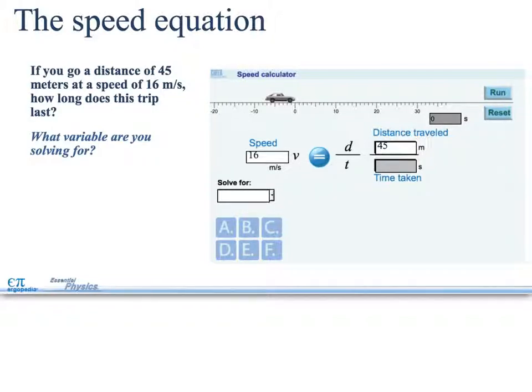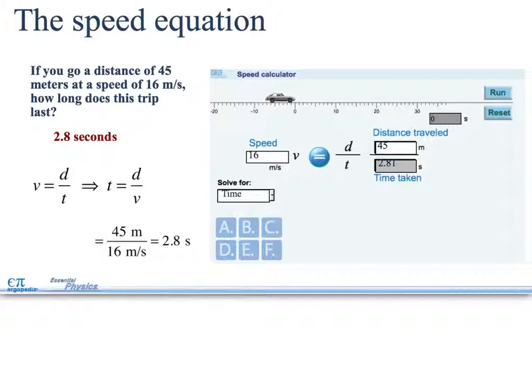If you go a distance of 45 meters at a speed of 16 meters per second, how long does this trip last? So we had to rearrange this time to solve for time. So the distance would be divided by the velocity. So 45 divided by 16 gives me 2.8 seconds.